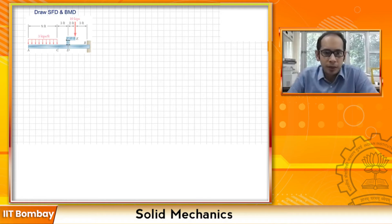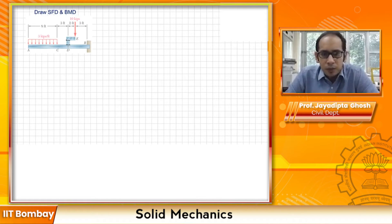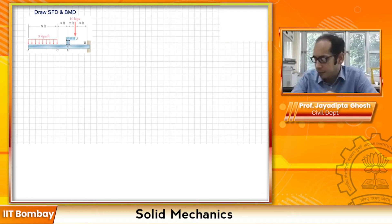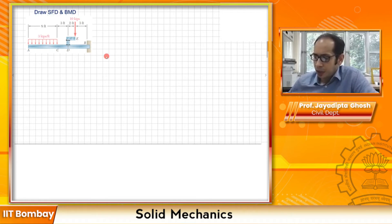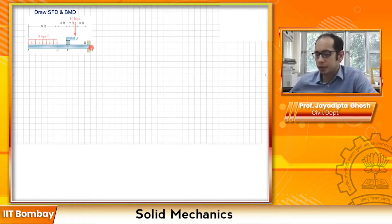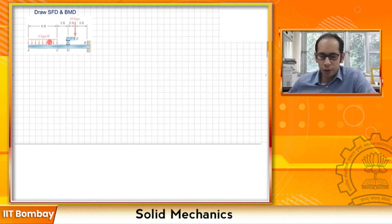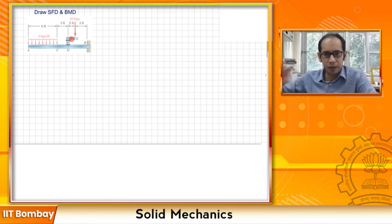This problem example is a cantilever beam but the loading is slightly different. The beam goes from A to B, where A is the free end and B is the clamped end. There is a uniformly distributed load, and at point D there is a kind of projection.